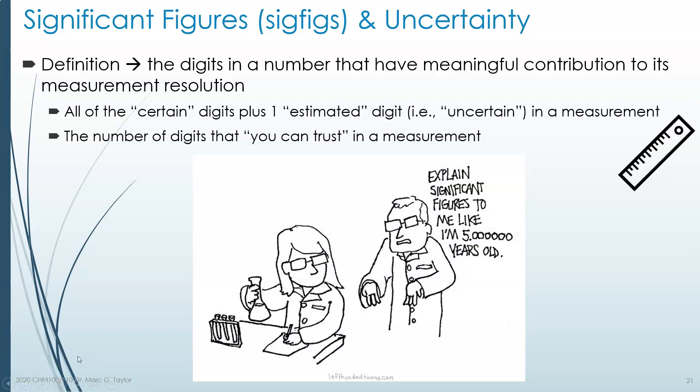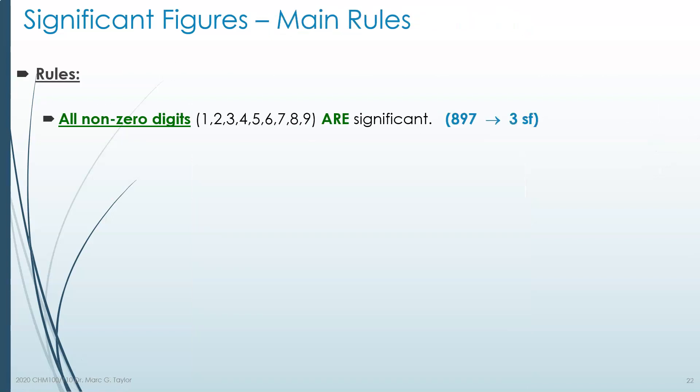So it's the number of digits that you can actually trust in a measurement. There are very specific rules about what is considered a significant digit and what is not, once someone gives you an actual measured value.